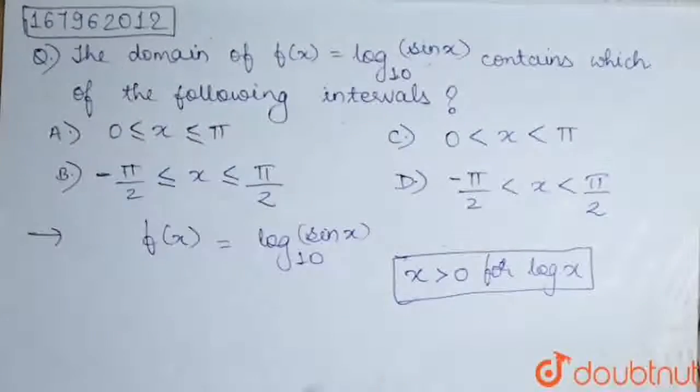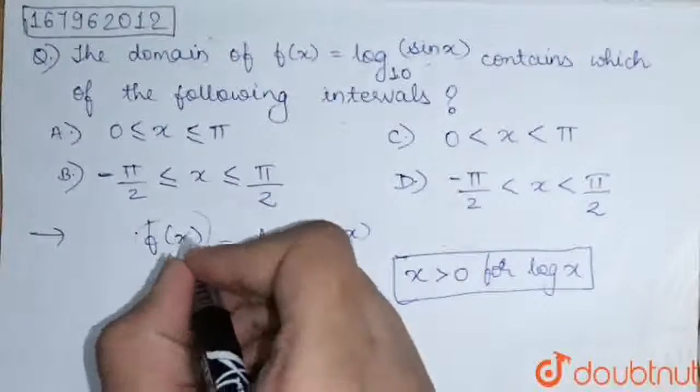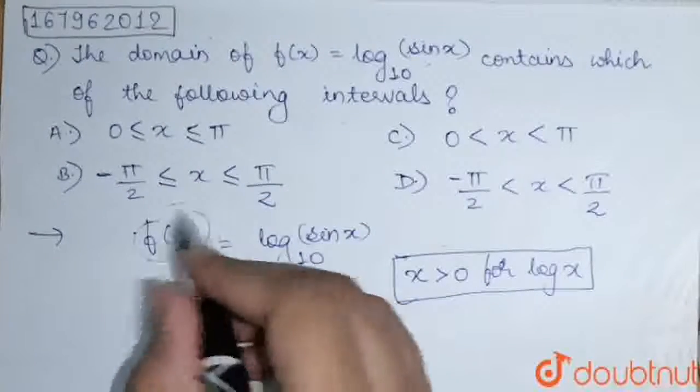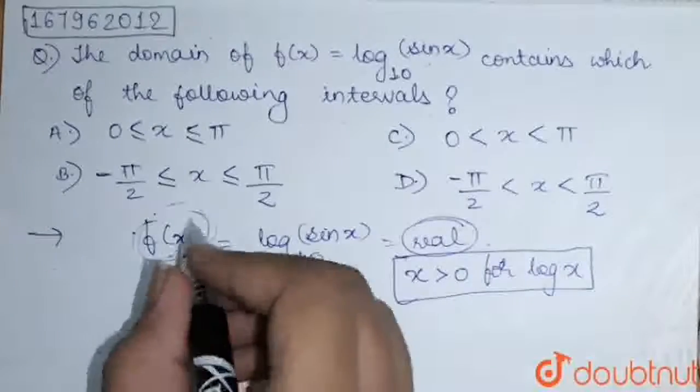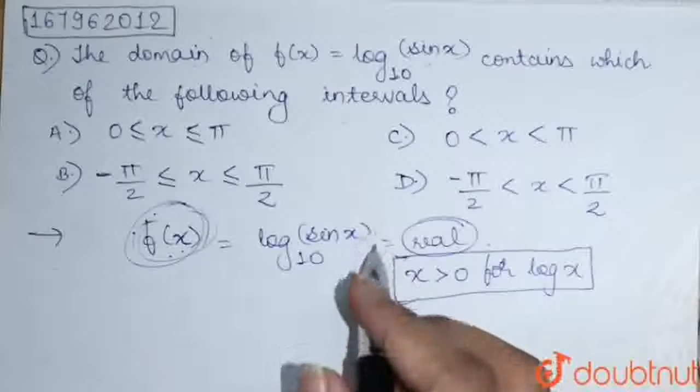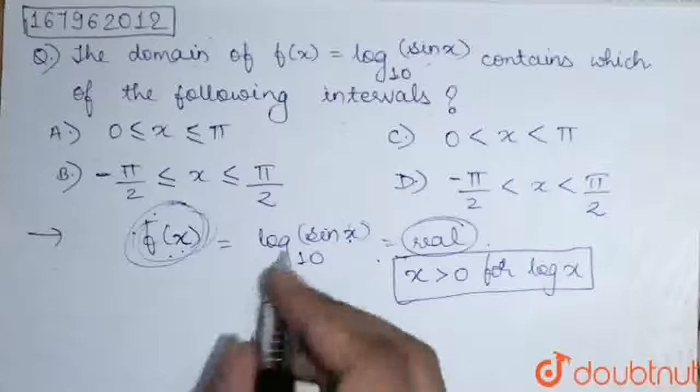Now, we have to find domain of the function. Domain of the function f(x) simply means the values of x for which f(x) would be real. This function output should be real. So, we have to put x values in this way so that the output should be real.